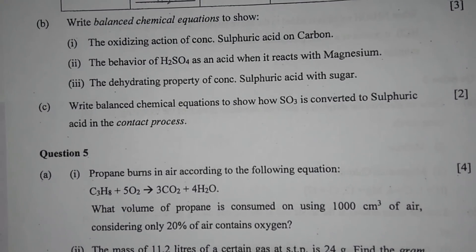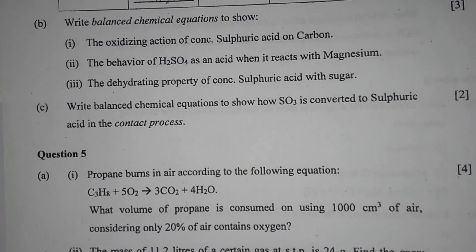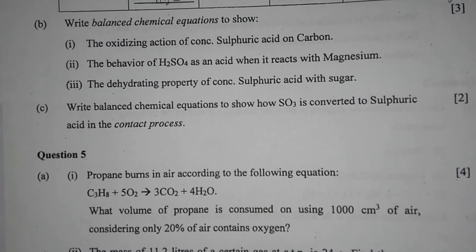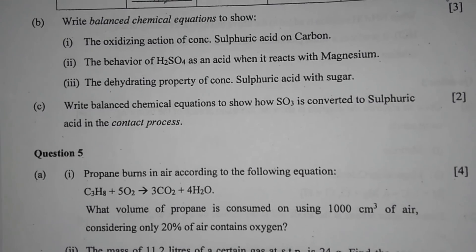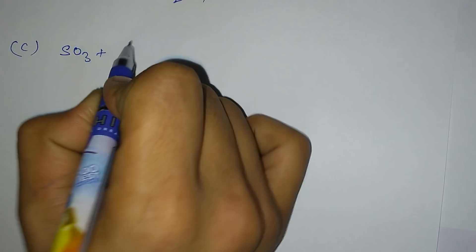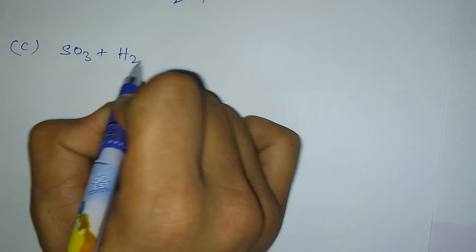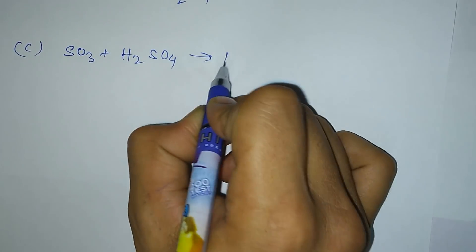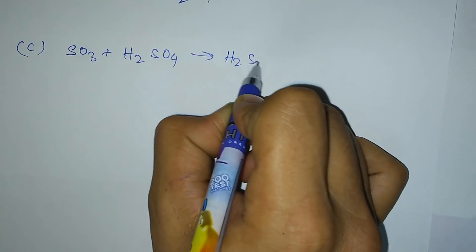Question 4c: write a balanced chemical equation to show how SO3 is converted to sulfuric acid in the contact process. First, sulfuric acid is added to SO3 to form oleum; then oleum reacts with water to give sulfuric acid.